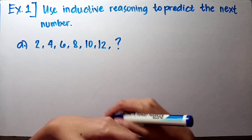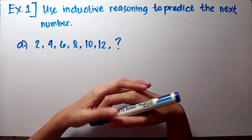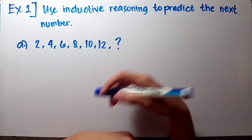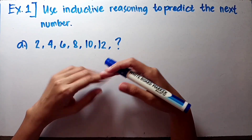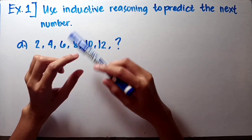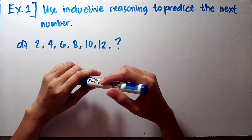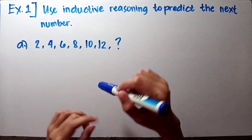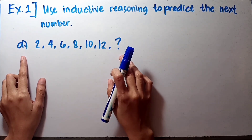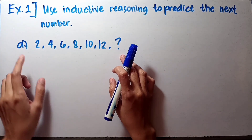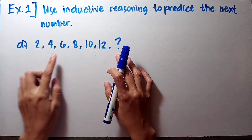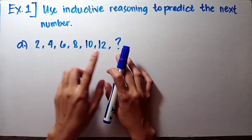Let's better understand inductive reasoning in the context of mathematics in the modern world. For example number one, the instruction is to use inductive reasoning to predict the next number. For letter A, the given series of numbers are 2, 4, 6, 8, 10, and 12.